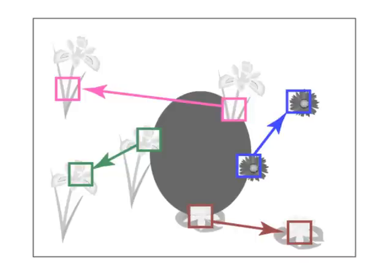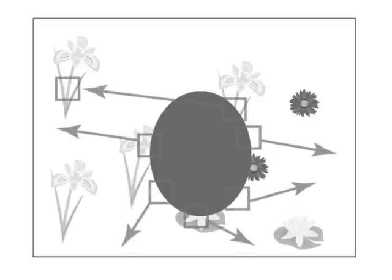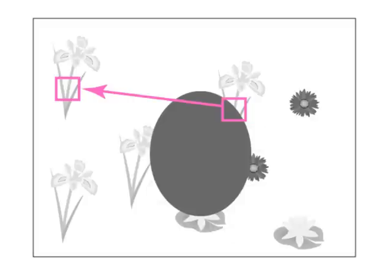We make two key observations about these searches for similar patches. First, random guesses for the correspondence are likely to be wrong most of the time. But in a sufficiently large region, a few lucky guesses will be almost the correct correspondence. Second, once we do find a good guess for any one patch, it is likely that many nearby patches have similar correspondences.